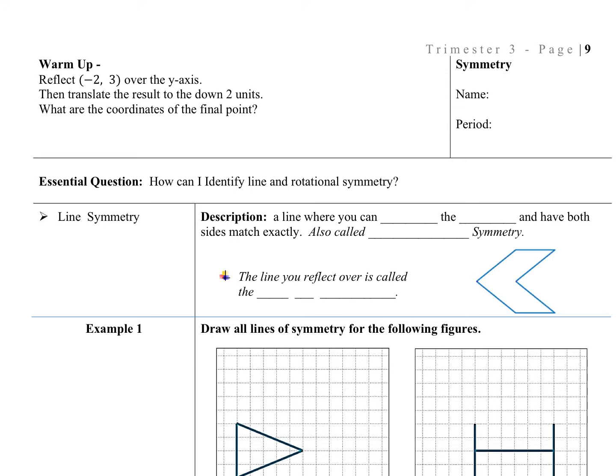So first off, what is line symmetry? It's basically a line where you can fold or flip the image and have both sides match exactly. So you flip it over or you fold it over and it's congruent on both sides. This is also called reflectional symmetry, hence why if you reflect it over a line, it's going to be the same thing. So reflectional or just reflection symmetry. Those are both okay.